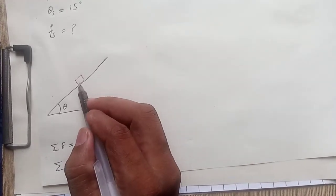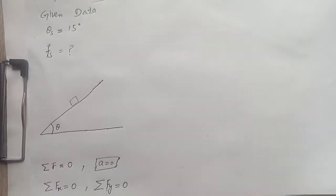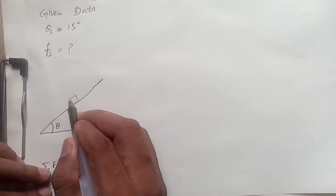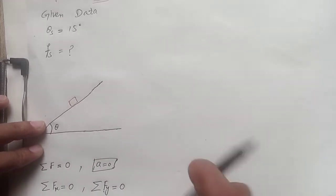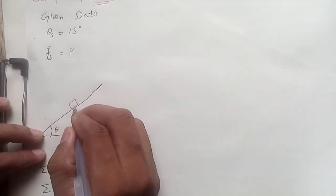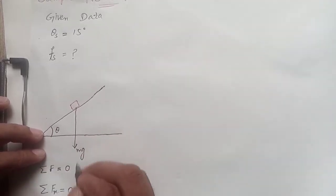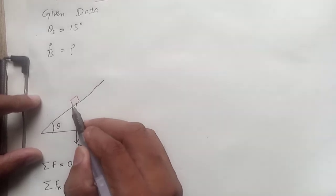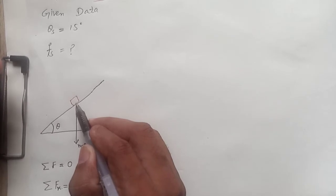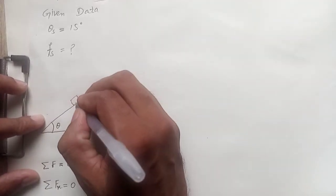Now we see how many forces are acting on this block and then apply these conditions to calculate the coefficient of static friction. Since the block is on an inclined plane with mass m, its weight mg is acting vertically downwards. The surface of the inclined plane also exerts a reaction force on the block — the block exerts a force on the inclined plane and the surface exerts a normal force in return.